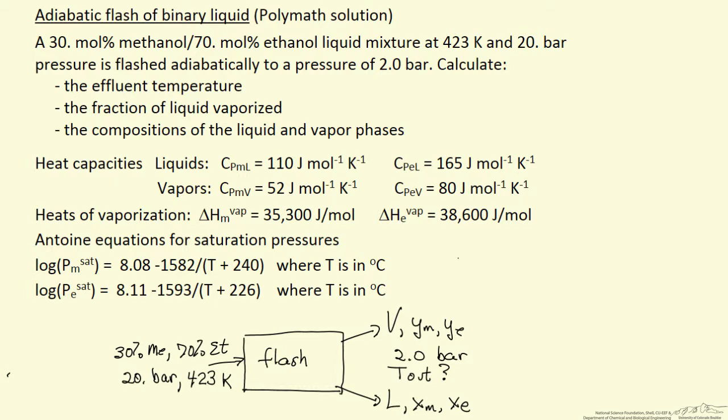So we're given Antoine's equations, heat capacities and heats of vaporization. We're assuming heat capacities and heats of vaporization are constant just to make the calculations simplified.